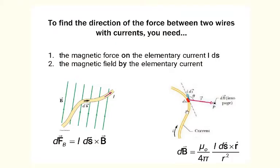We have already learned how to calculate the force on the wire if we know the current through the wire and the magnetic field. The force is obtained by dividing the wire into many small elements ds, calculating the force on each small element i ds cross B, and integrating the elementary force over the whole length of the wire. While each elementary current ds feels magnetic fields created by other currents, it also creates a magnetic field of its own.